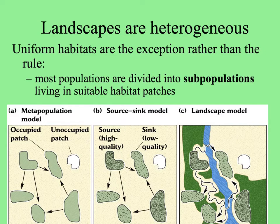The first is the metapopulation model, the next the source-sink model, and finally the landscape model, where barriers in the landscape may inhibit, and other passages help, individuals move between populations.